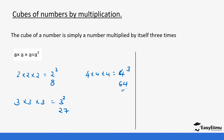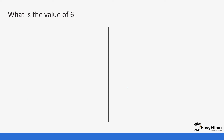So a cube means you take that number and multiply it by itself three times. For example, 6 cubed is 6 times 6 times 6. If you multiply 6 by 6 you get 36, and then 36 times 6 gives you 216.